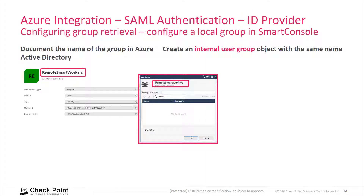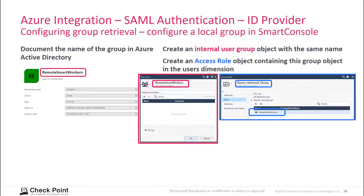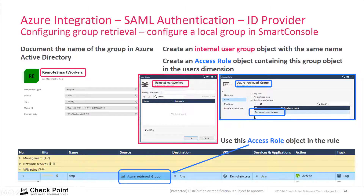In Smart Console, define an internal group object with exactly the same name — exact same spelling — as the name configured in Microsoft Azure. This step is currently necessary in this particular custom hotfix for R80.40. This internal group then needs to be used in the Users dimension of an access role object, which can then be used in access control and threat prevention rules in the rule base.